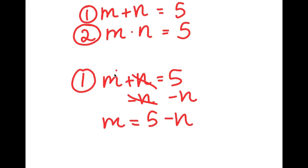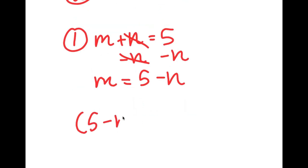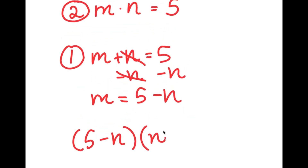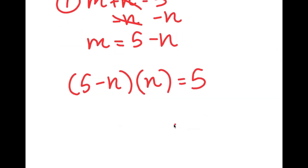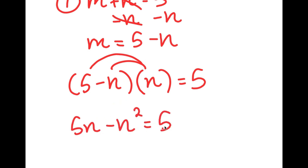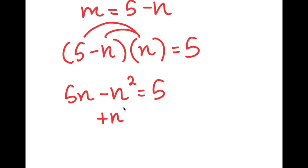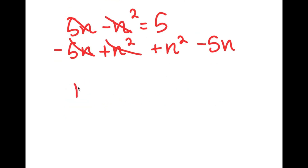Now I can substitute this value of M back into equation 2. So I get 5 minus N times N is equal to 5. Distributing the N: 5 times N is 5N, and negative N times N is negative N squared. So 5N minus N squared equals 5. Adding N squared on both sides and subtracting 5N on both sides, I get N squared minus 5N plus 5 is equal to zero.